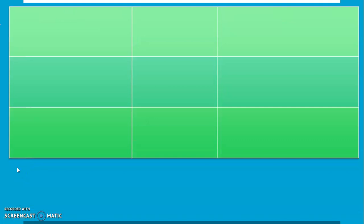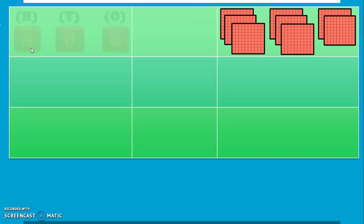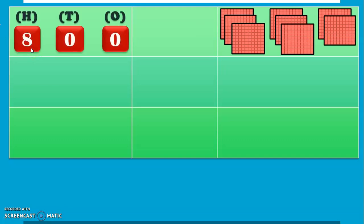Now, let us move on to the next number. How many blocks of 100s do we have here? 1, 2, 3, 4, 5, 6, 7, and 8. So we have 8 blocks of 100, making the number 800. The number name for the same will be Eight Hundred.